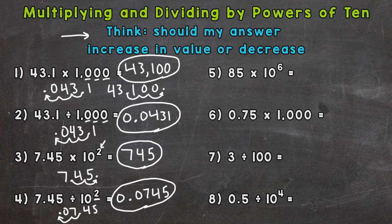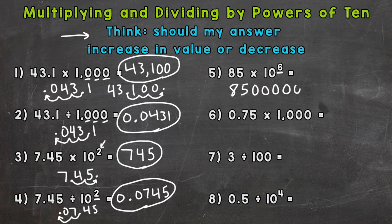Number 5, we have a whole number times 10 to the power of 6 — exponential form. When we have a whole number, we can think of it as putting zeros on the end of that 85 to push it to the correct place value, which is the same as moving the decimal. 10 to the sixth power means we move the decimal six times. We're multiplying, so we increase the value. We place six zeros at the end of 85: 1, 2, 3, 4, 5, 6 — put our commas in, and we end up with 85 million.